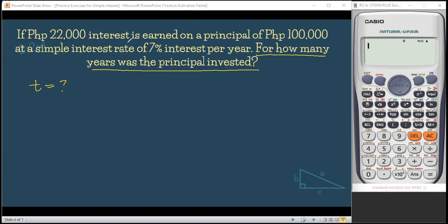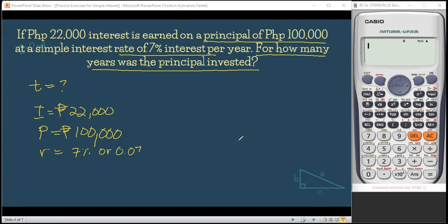So if P22,000 interest, so given that P22,000 is the interest, we write P22,000 is earned on a principal of P100,000. So P100,000 is our principal. At a simple interest rate of 7%, so that is 7% or the rate, or in decimal that is 0.07. Now, we said earlier, we only have two formulas for simple interest and one of which is I equals PRT. However, my dear students, in this problem, we're not looking for interest but for time.